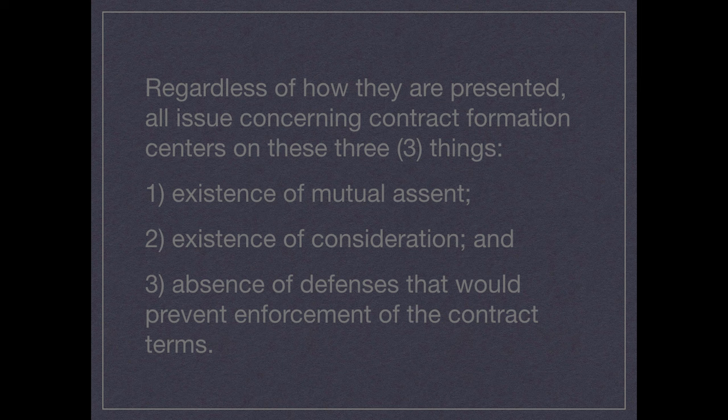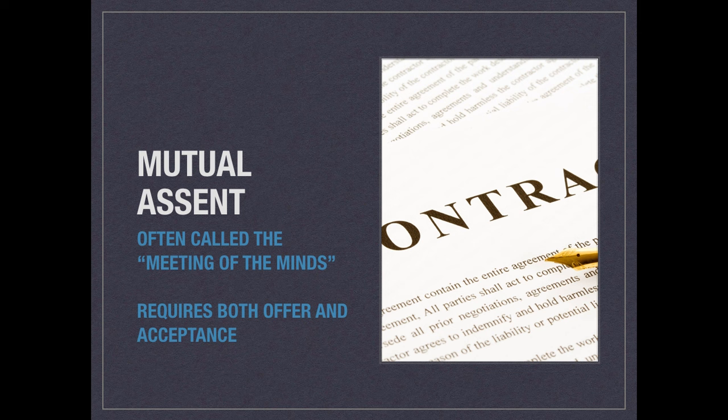We're really going to focus on the existence of mutual consent and whether or not there was consideration. Keep in mind as we go through this slideshow that we're learning whether or not, when we look at a contract, if it's valid. So mutual consent is the first thing we want to talk about. On the surface, it's pretty simple. It's the meeting of the minds. It requires both an offer and an acceptance.